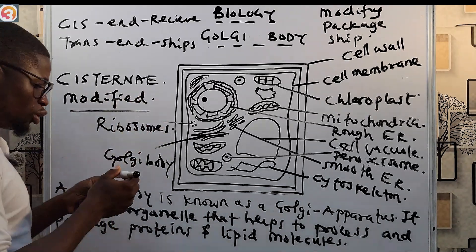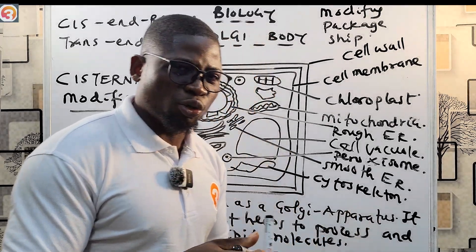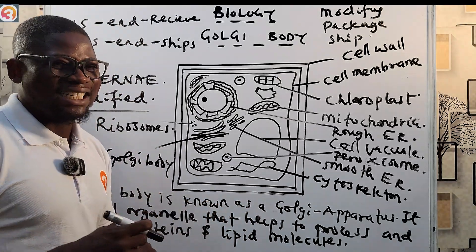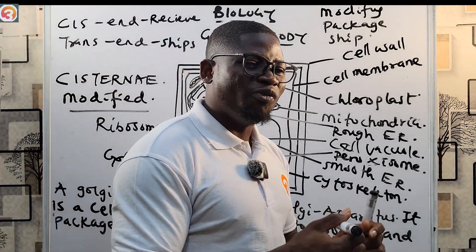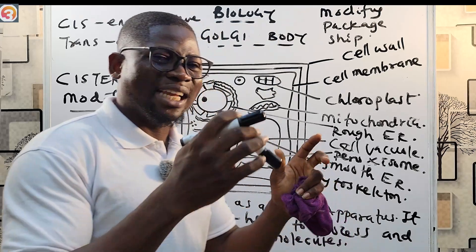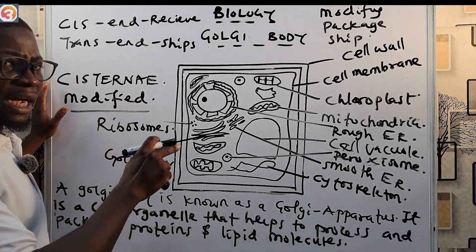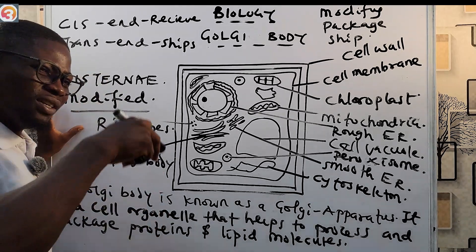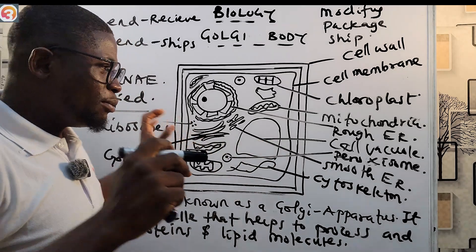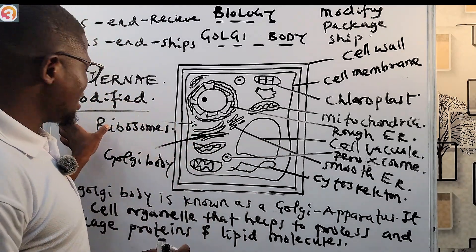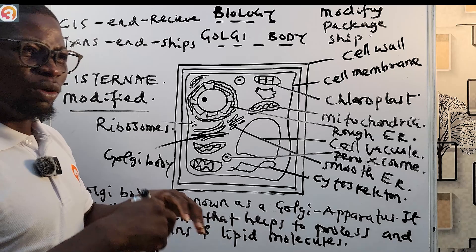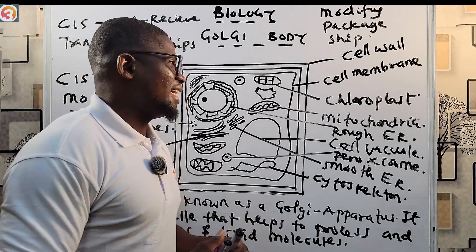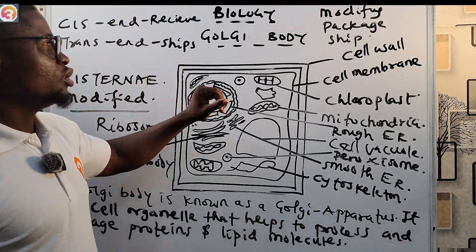As it moves through the Golgi body, it is modified. This modification can involve the addition or removal of some chemical groups. Once it reaches the trans end, the molecule is shipped off to various locations in the cell where it is needed.